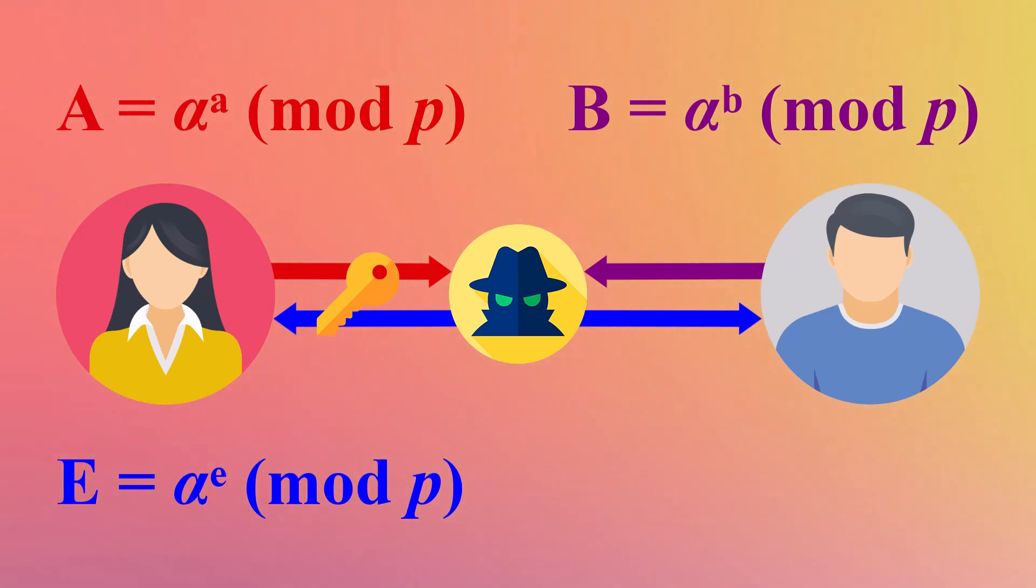Finally, Bob and Eve use each other's public values to compute a different shared secret, which Bob thinks he shares with Alice. In reality, this secret is between Bob and Eve.